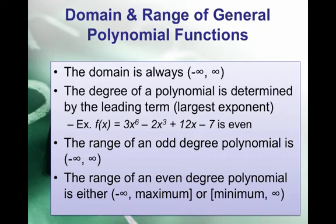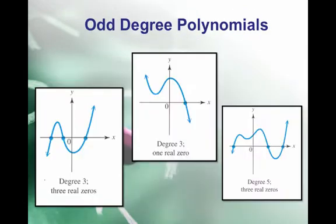What happens when the degree is even? The range of an even degree polynomial is either (-∞, maximum] or [minimum, ∞).